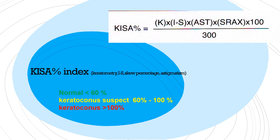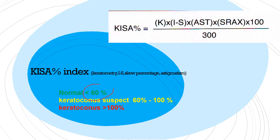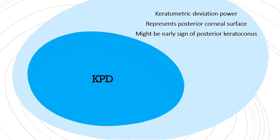The KESA index depends on topography — not tomography. It uses the K value, inferior-superior, AST, and stracks, calculated as: stracks × 100 ÷ 3. Less than 60% is normal, 60–80 is suspicious, and more than 100 is keratoconus. Last is the KPD — keratometric deviation power — which I've covered in the section on parameters.